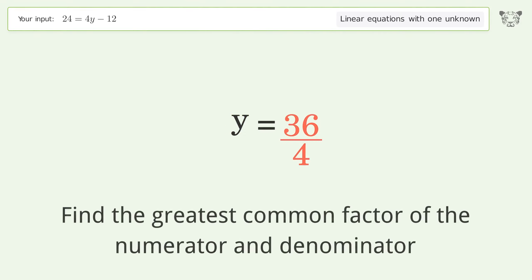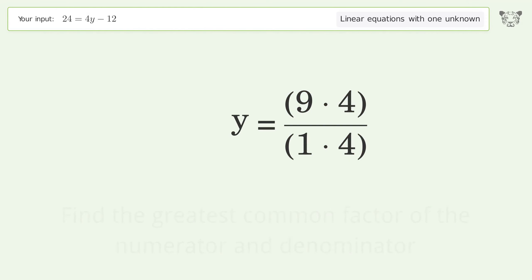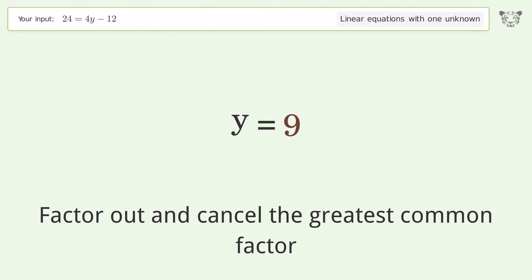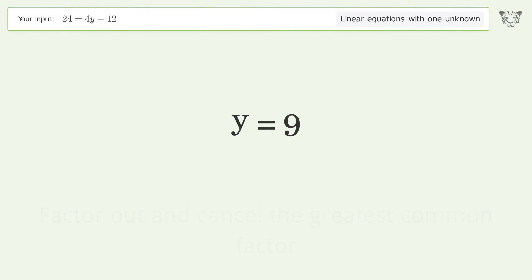Find the greatest common factor of the numerator and denominator. Factor out and cancel the greatest common factor. And so the final result is y equals 9.